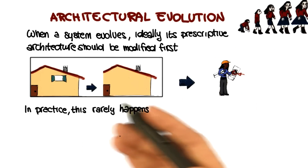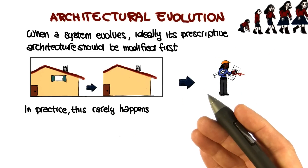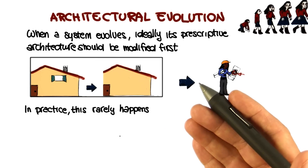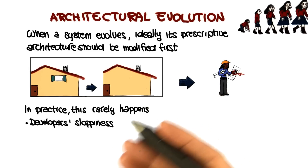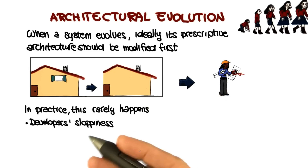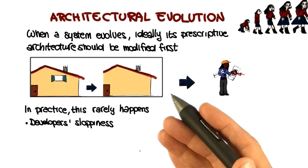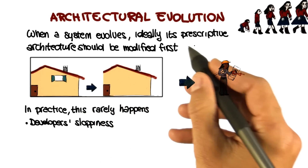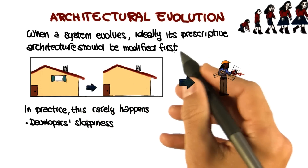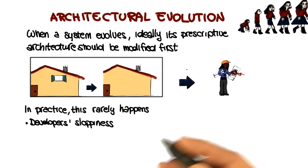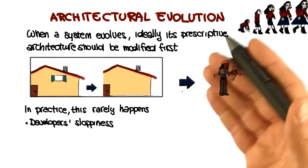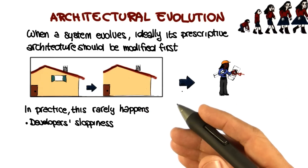This really happens for a number of reasons. In some cases, it just happens for plain sloppiness — needing to make a modification without going back to update the prescriptive architecture, just making the change, and maybe fixing the description later. But then you never really get to it.